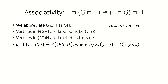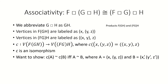Next, let's define a bijection c that maps vertices from f(gh) to (fg)h in the manner shown here. c is our desired isomorphism. What we want to show is that for any pair of vertices a and b in f(gh), c of a is adjacent to c of b in (fg)h if and only if a is adjacent to b in f(gh).